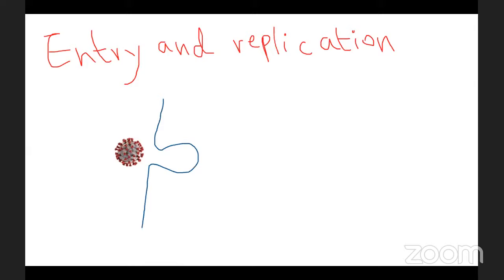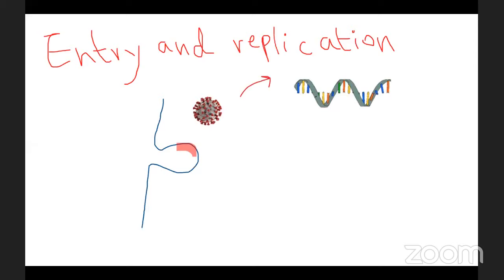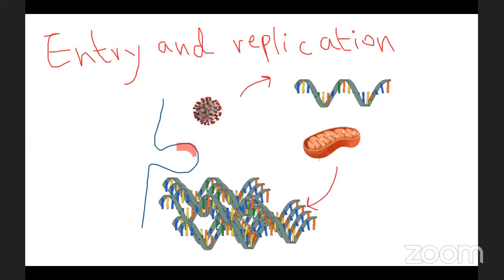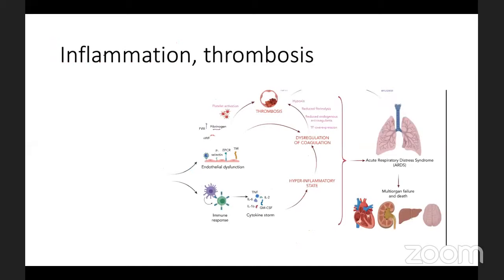The causative organism, SARS-CoV-2, is a very special and atypical virus. It attaches itself to the ACE2 receptor on the cell wall and gains entry into the cell. Once inside, it sheds its RNA, which takes over the host mitochondria, forcing it to replicate the RNA several fold. These replicated RNA form new viruses that escape and infect other cells, causing widespread harm primarily to the lungs.